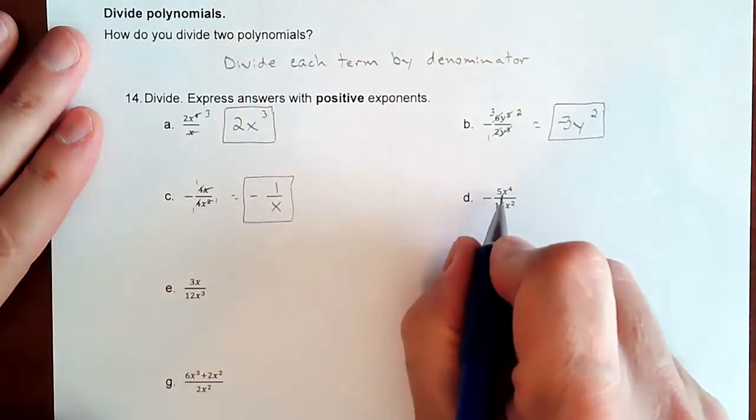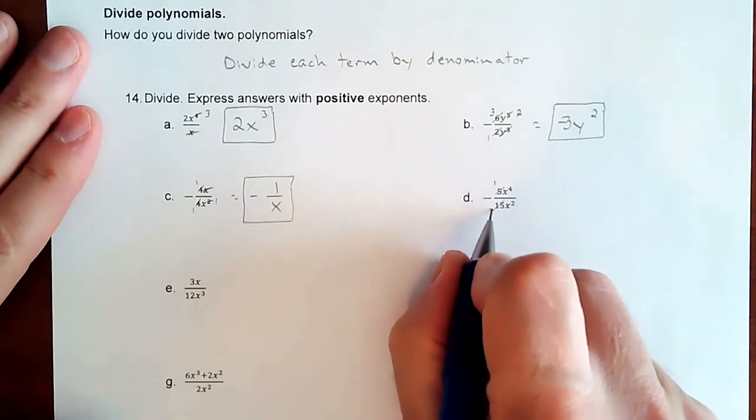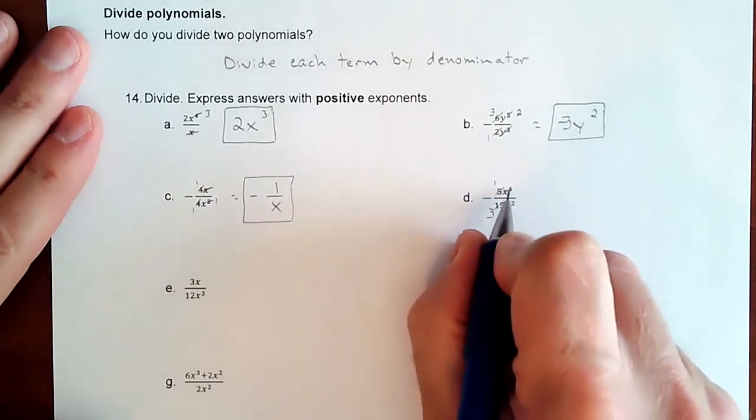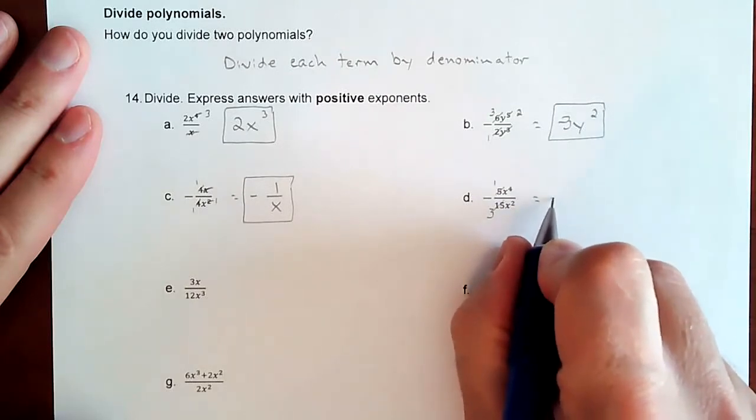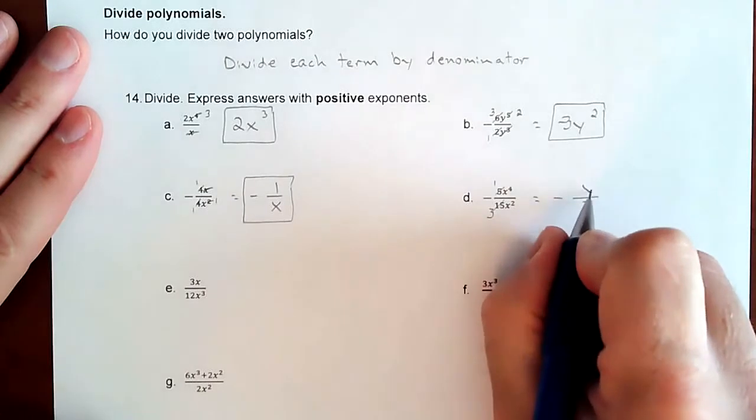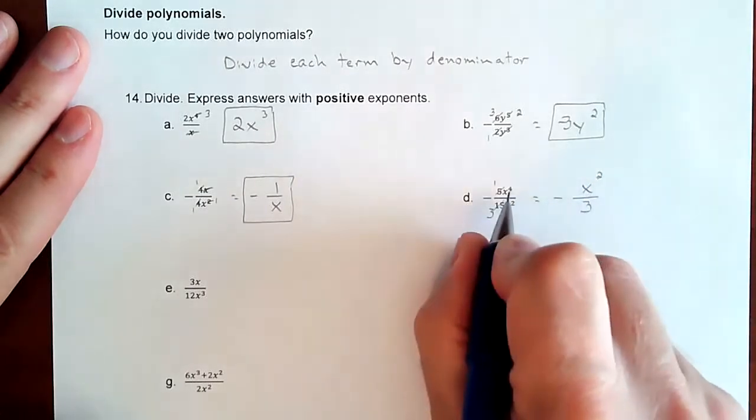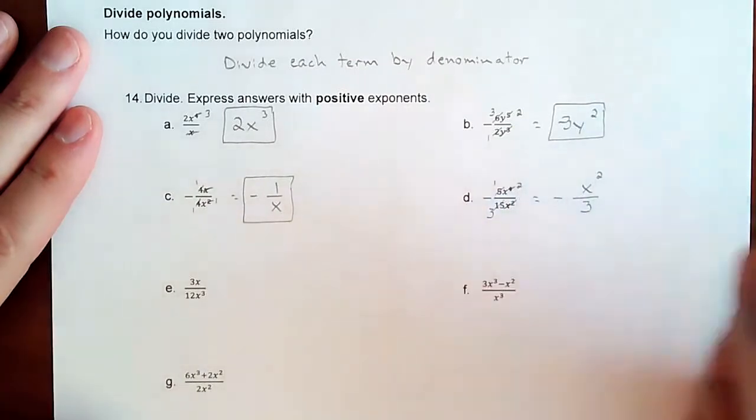Right here, you get a five and a 15. Five goes into both. So that goes in one time, goes in three times. More X's on the top by two. So you're getting still a fraction with a three on the bottom and two X's left on the top because two of those will cancel two of those.